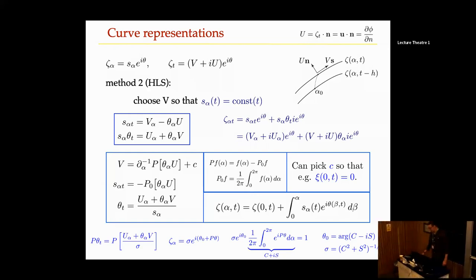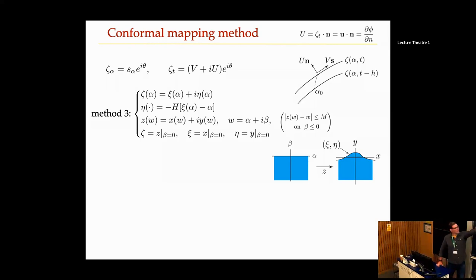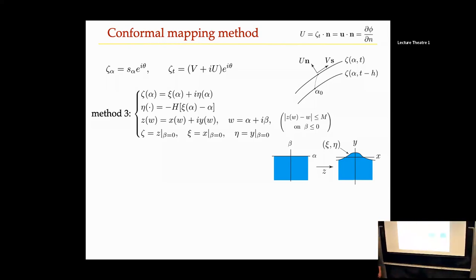A method Xinyu and I have used for quasi-periodic solutions is the conformal mapping approach, learned from Paul about ten years ago. You choose the tangential velocity to keep the data related by a Hilbert transform, so that you're looking at the boundary of a conformal mapping. You want it to be the Hilbert transform of xi of alpha minus alpha — the alpha sets the scale so the conformal map approaches the identity as you go far away.